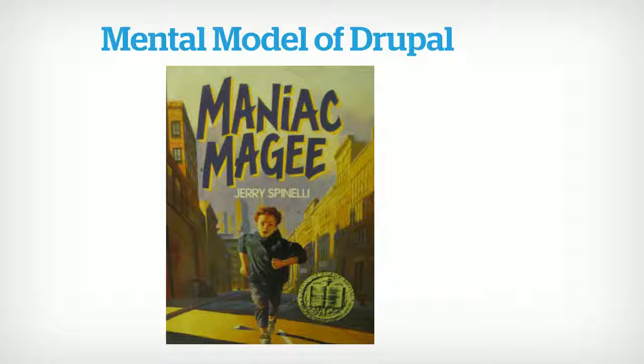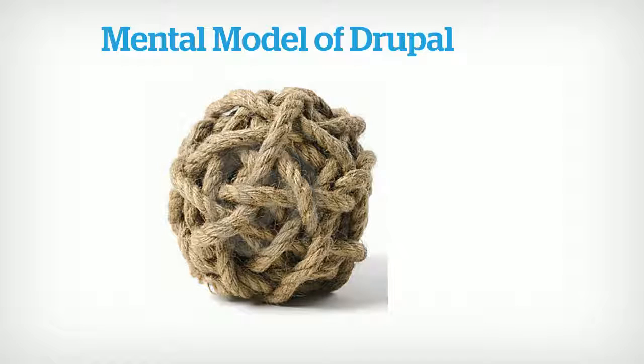Anybody ever read Maniac Magee? It's one of the all-time classics. When I was in film school this was the book I wanted to turn into a movie — and then Nickelodeon did it and I haven't brought myself to watch it because I'm sure it's terrible. In the book there's a very important lesson. There is a pizza place, Cobble's, and out front they have a flagpole with a rope that has been getting tangled and knotting for years and years. It is, to the mind of the children, the largest and most impenetrable knot ever in the history of the world.